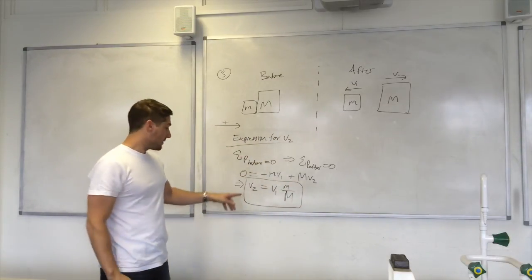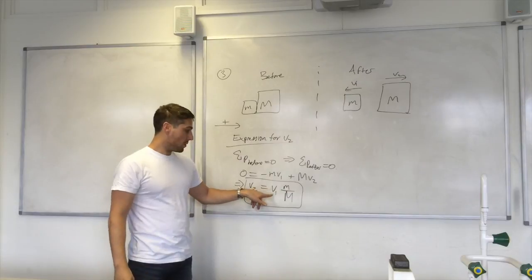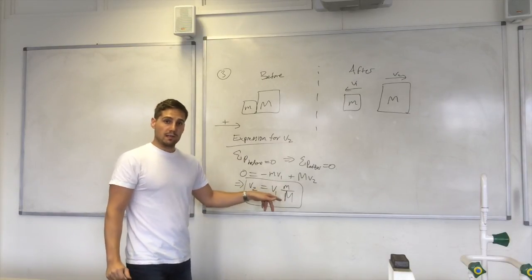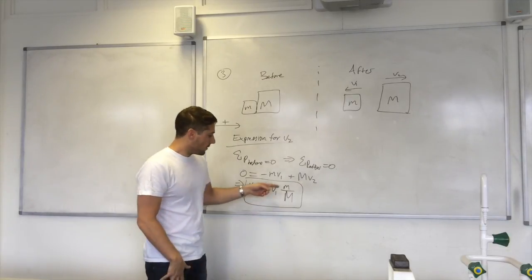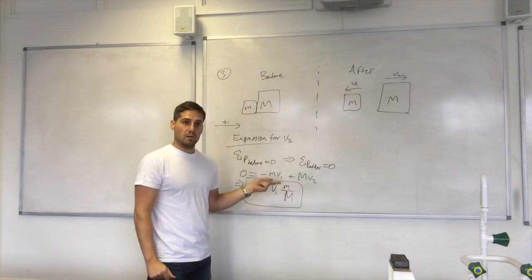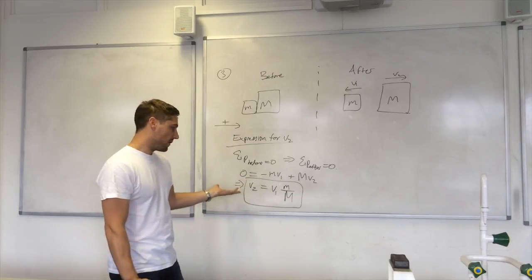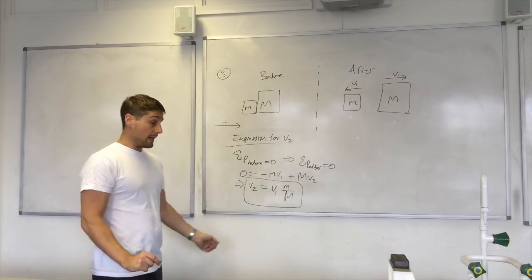And then so I get v1 times lowercase m over uppercase M. So what I've got there is that v2 is equal to the other velocity, v1 multiplied by a ratio of the masses. That's important because the units for mass cancel out here so I have actually got units of velocity on both sides of the equation so that equation is valid.